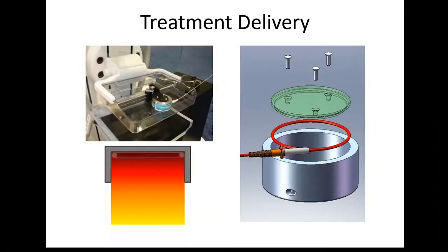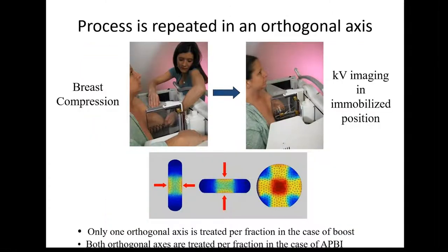Treatment delivery involves placing the applicator in the appropriate position on the compression plate, and then the HDR source traverses the applicator to generate a highly collimated photon beam. This process is repeated in the orthogonal axis, and the dosimetric properties of AccuBoost depend on the cumulative dose distribution at the target center, resulting in high dose at the target with relatively low dose to surrounding breast tissue and particularly to the skin.